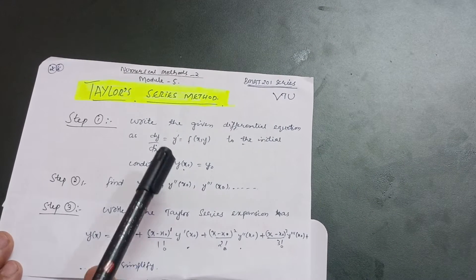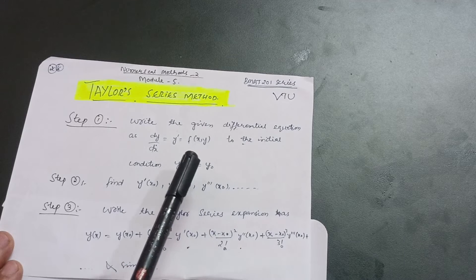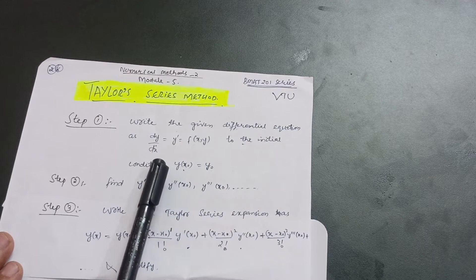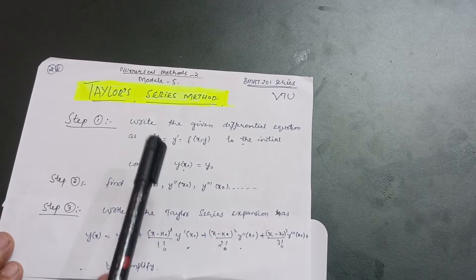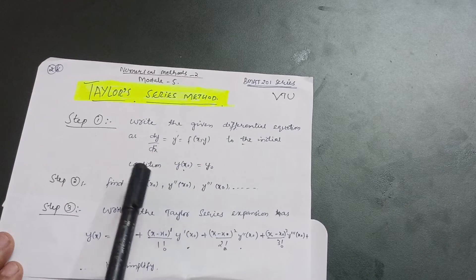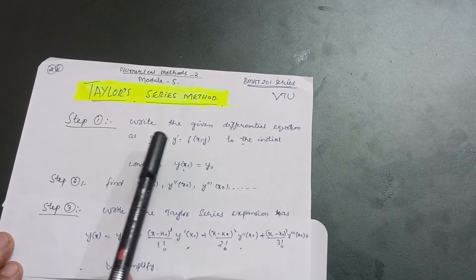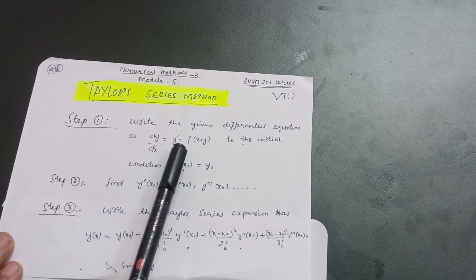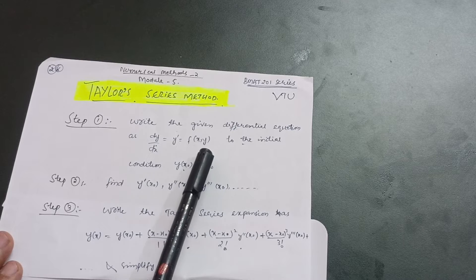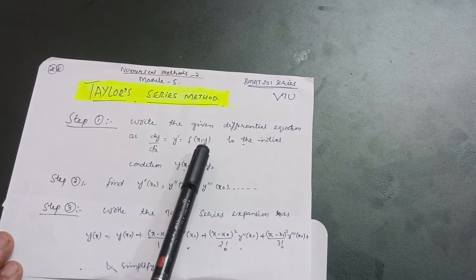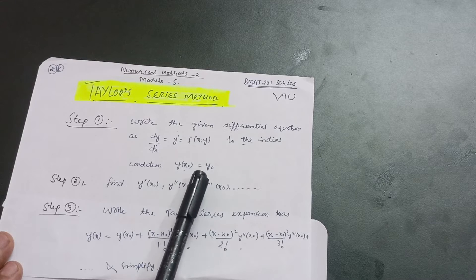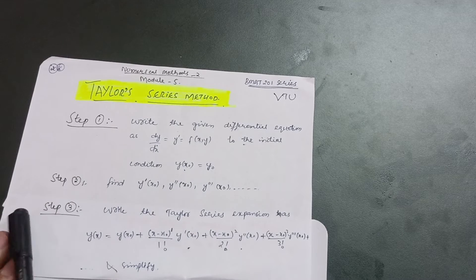Step one: write down the given differential equation as dy/dx. In the question, the differential equation will be given — like dy/dx equals something, 2x plus 3x, like that. You have to write that equation in terms of y dash equals f(x, y), along with the initial condition y(x₀) equals y₀.